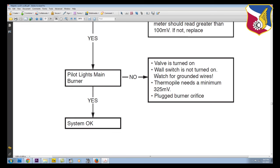Now if the pilot light does stay lit, then does the burner come on? Now if the burner doesn't come on, again go back to the thermopile, it again needs 325 millivolts. Is the valve turned on? Is the wall switch on or off? You need to make sure that those are the conditions. Do you have a plugged orifice? And if all these check out, the system should work.